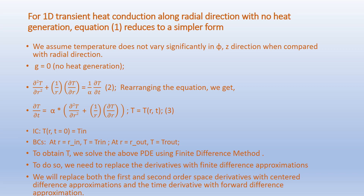Accordingly, the equation becomes: ∂²T/∂r² + (1/r)·∂T/∂r = (1/α)·∂T/∂t. This is rearranged as equation 3: ∂T/∂t = α·[∂²T/∂r² + (1/r)·∂T/∂r], where T is a function of the radial distance r and time t.